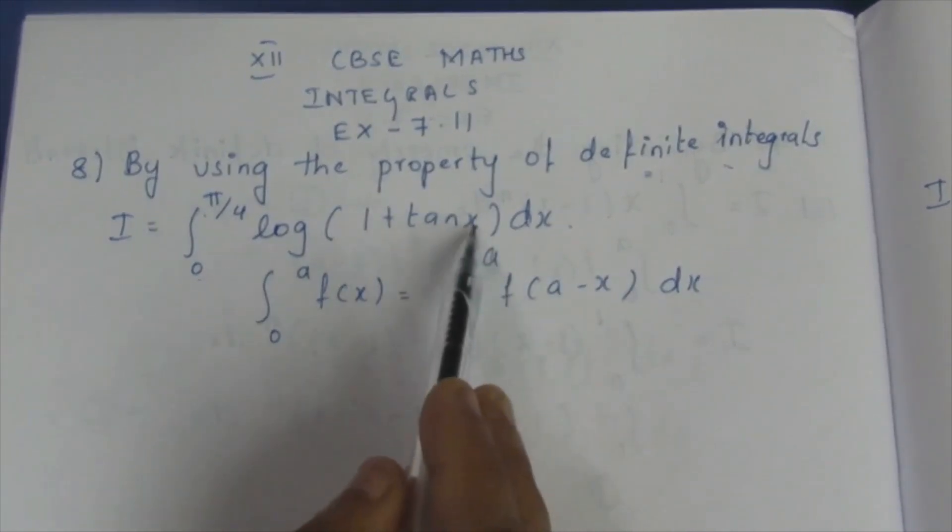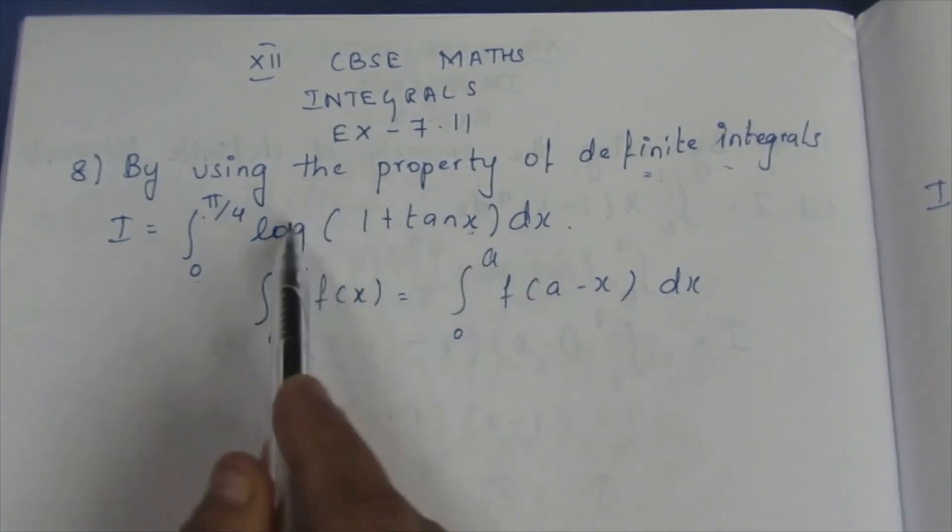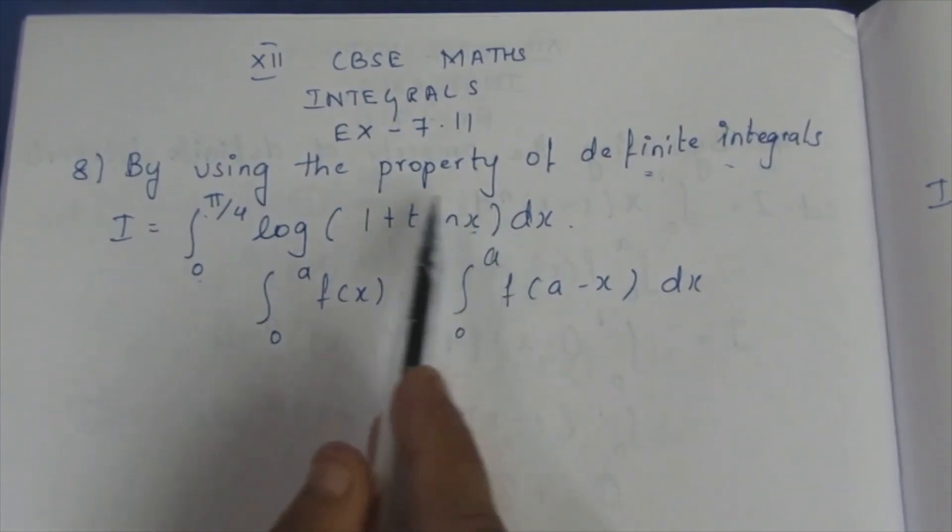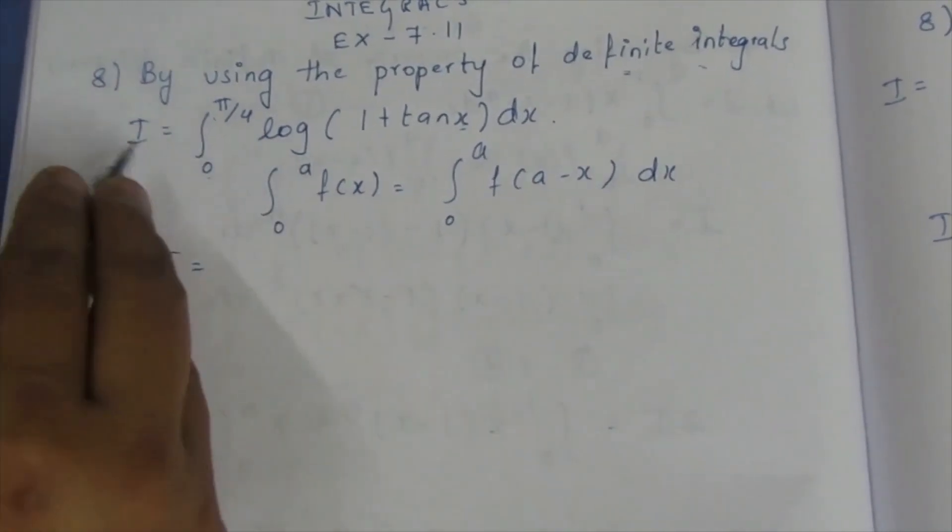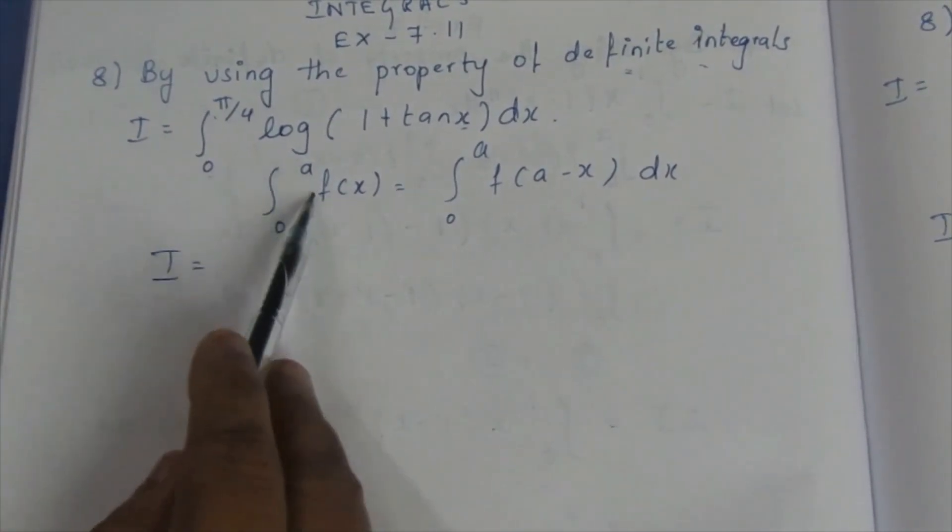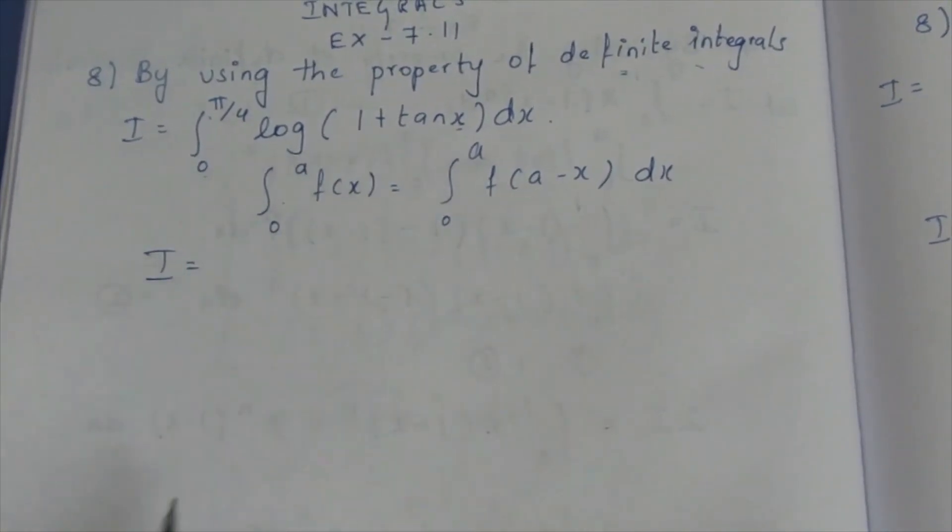I can write in place of x, I can write it as π/4 - x, the upper value minus x. Where the index, in place of x, we can substitute this. Even this is equal to, if I take this to be I, even this is equal to I because this is equal to this. If I take this to be I, even this becomes I.